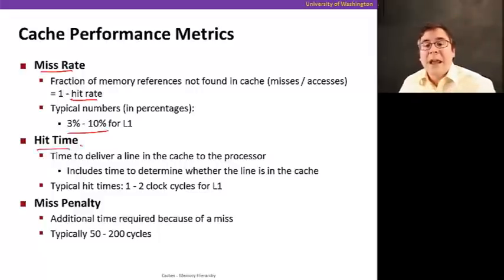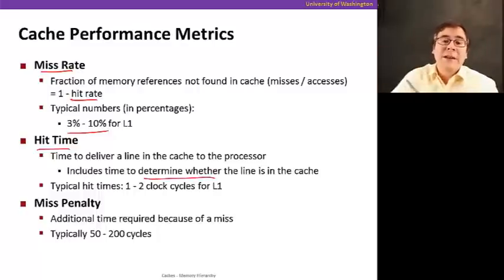Now, the hit time is the time it takes to deliver a cache line that's in the cache to the processor. You can consume the data. And that also includes the time to determine whether the line is in the cache or not. That's why in the previous example, we included the hit time even when computing the overall miss penalty.